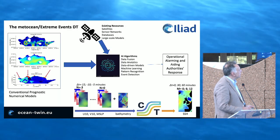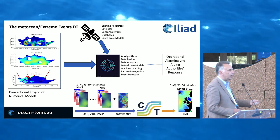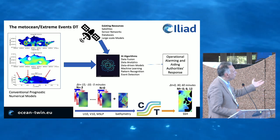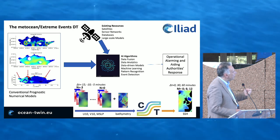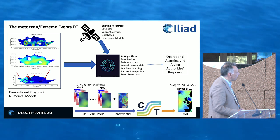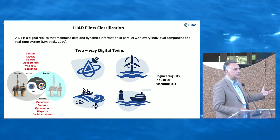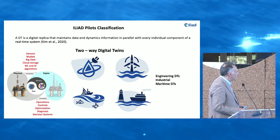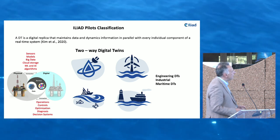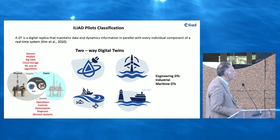The Metocean Extreme Events Digital Twin starts with conventional prognostic numerical models and utilizes data from existing resources — satellite, sensor networks, and databases — fed to AI algorithms for data fusion. We use data analytics, data-driven models, machine learning, pattern recognition, and event detection tools to operationalize and alert authorities about their response. In terms of two-way digital twins, we can now go back to the system to control, operationalize, optimize, run diagnostics, and produce informed decisions. These include wave energy, offshore wind energy, fishery, and harbour safety — more engineering, industrial, and maritime digital twins.